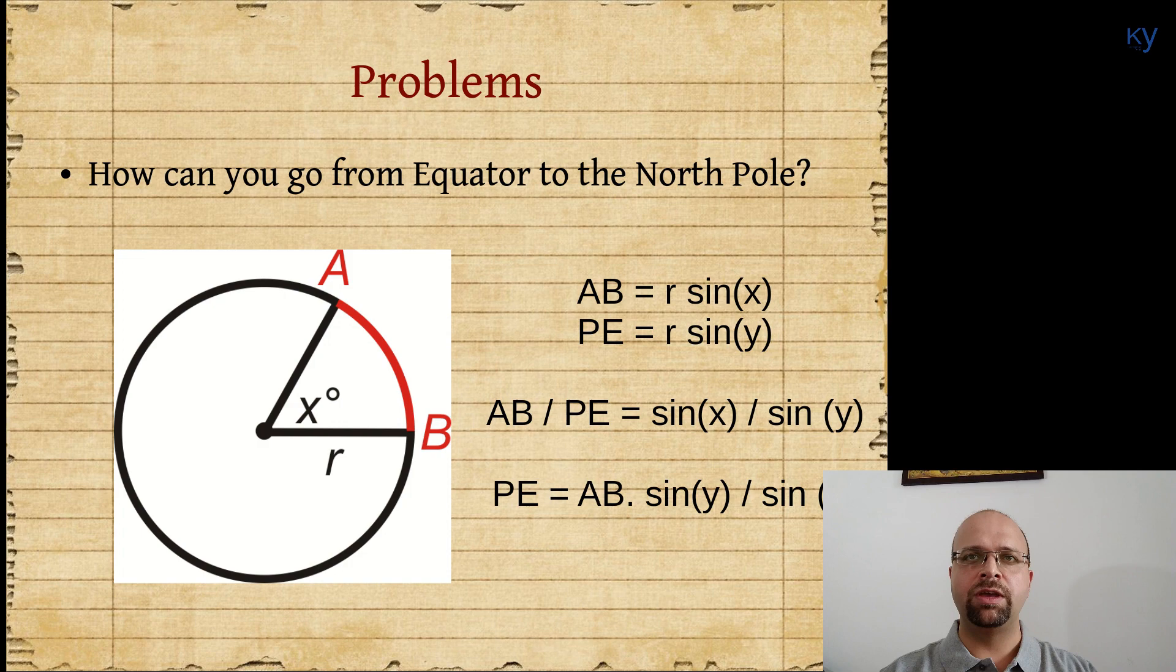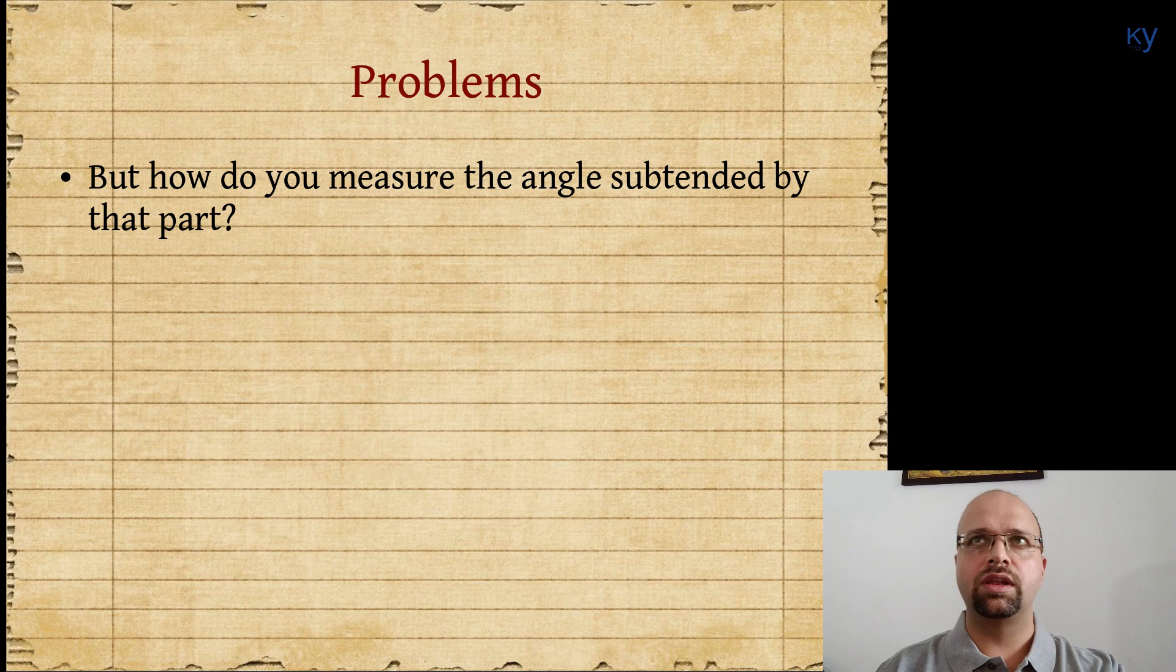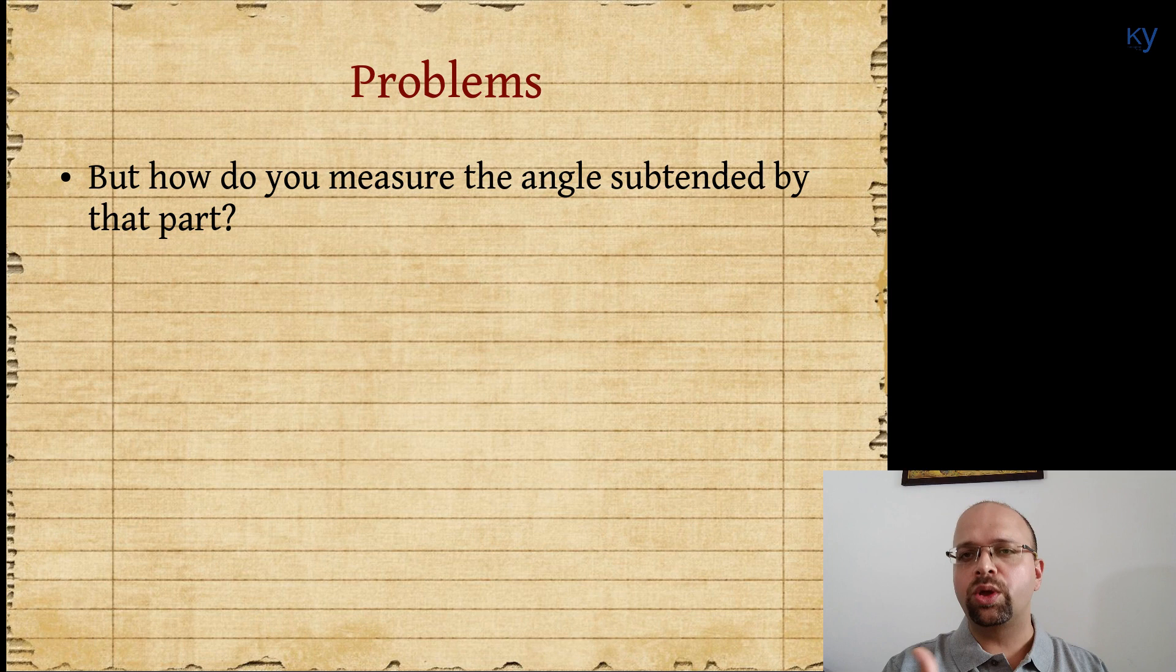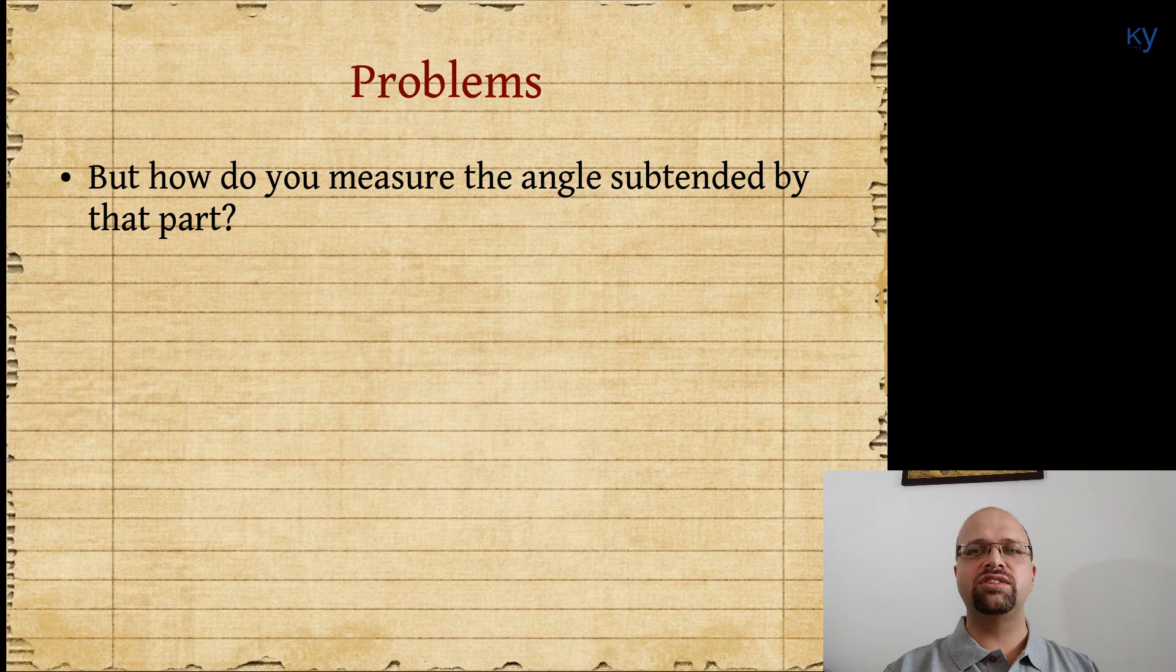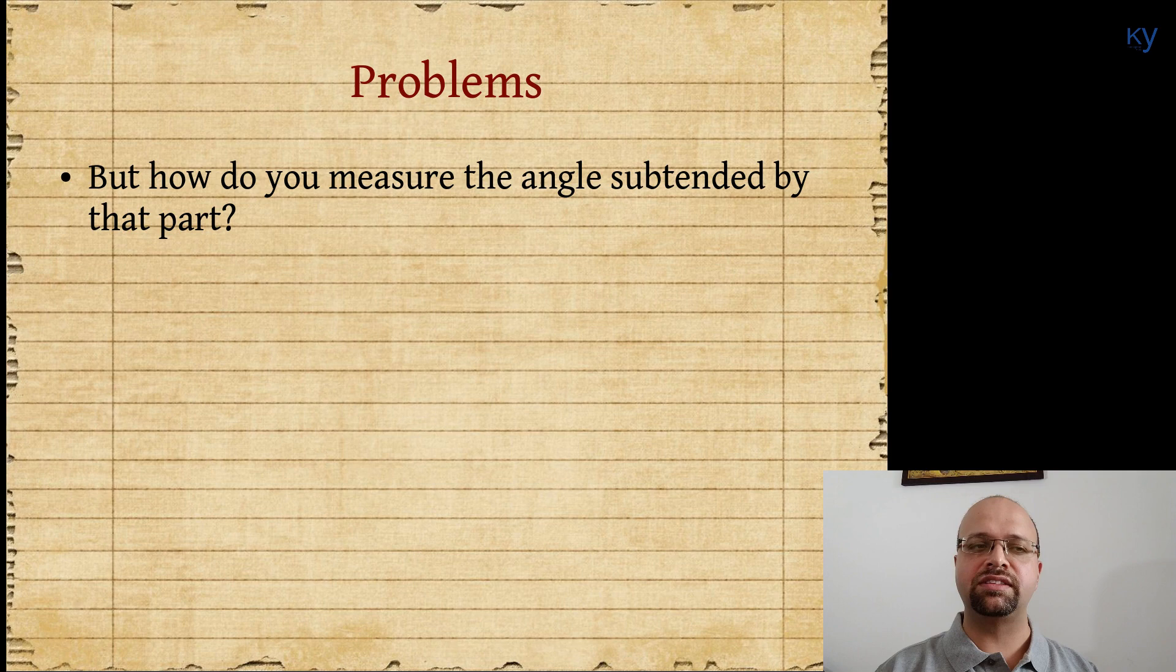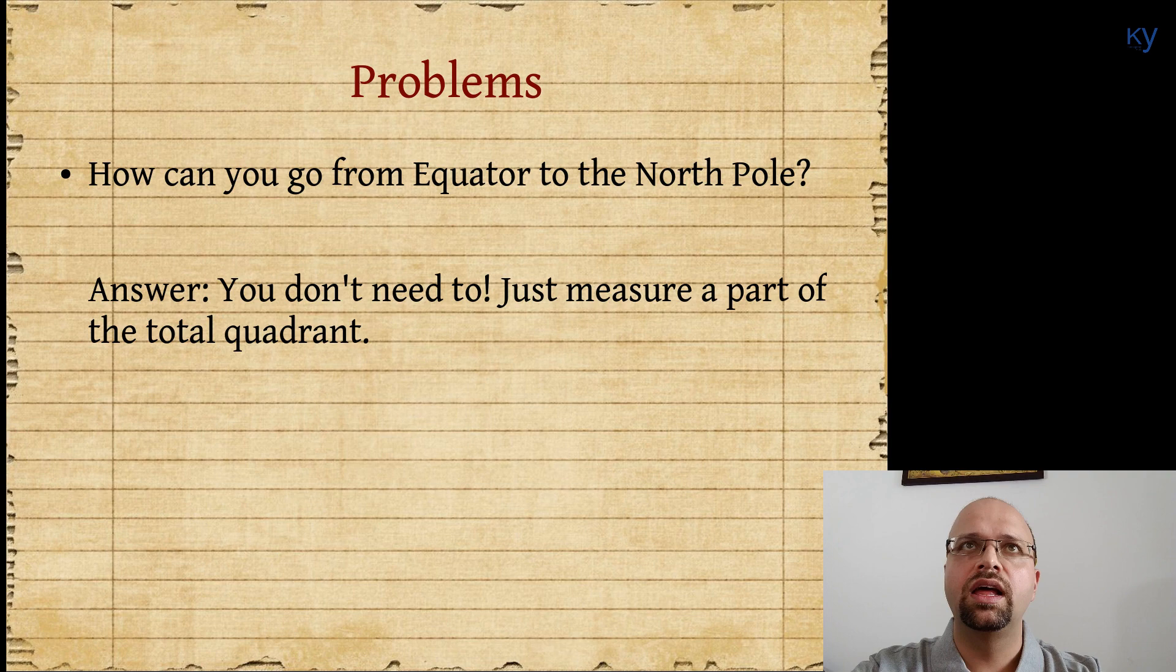So instead of measuring the whole distance, you measure part of the total quadrant and you can then use trigonometry in order to get the full distance. I am not explaining the trigonometry, so feel free to go back, pause the video, and if you know your trigonometry you can verify how it works. But all you need to understand is using trigonometry we can bypass the problem of doing the whole distance measurement and measure only part. The next important question is, to use trigonometry you need that x degrees. How do you measure that?